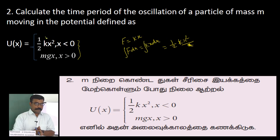So we have two different potential fields here. One is a spring potential field, and the other is a gravity potential field. The expression mgx is the gravitational potential energy, and (1/2)kx² is the spring potential energy.